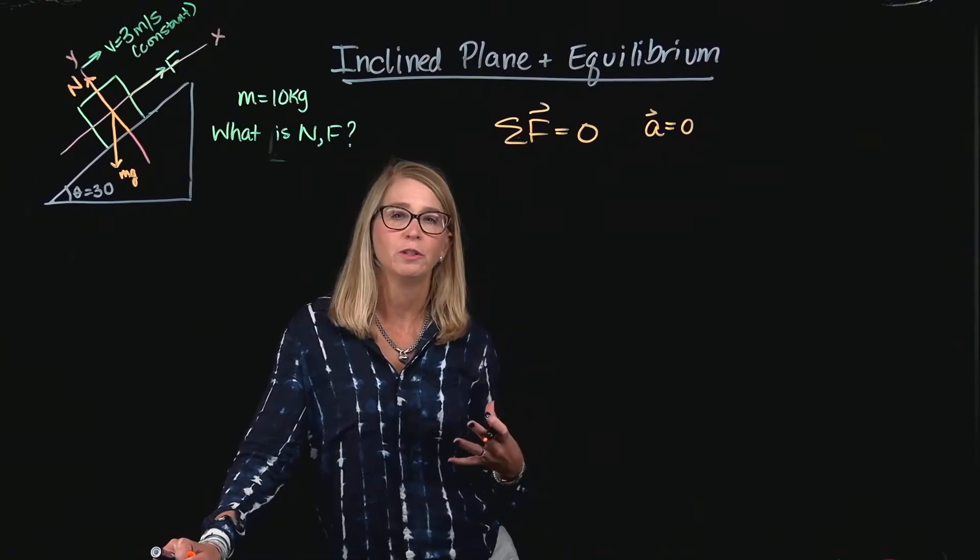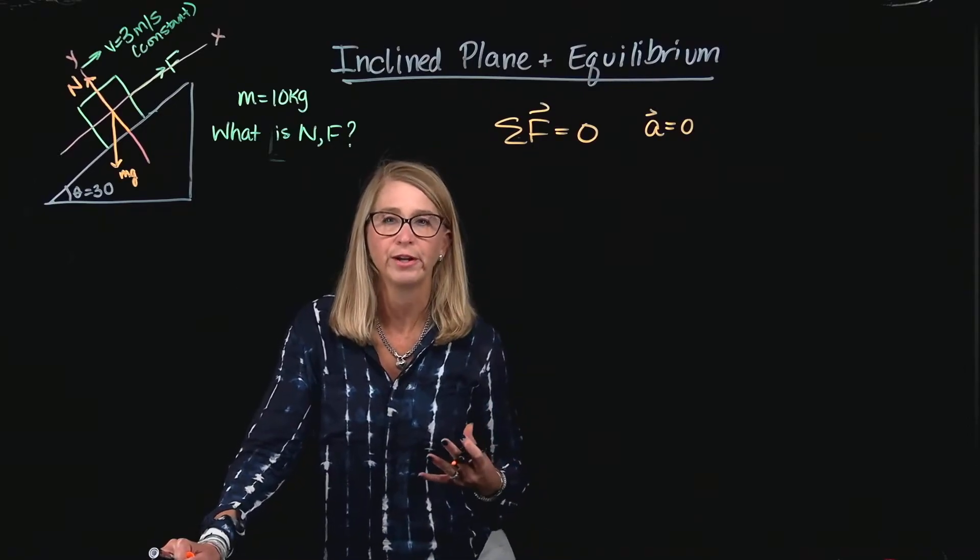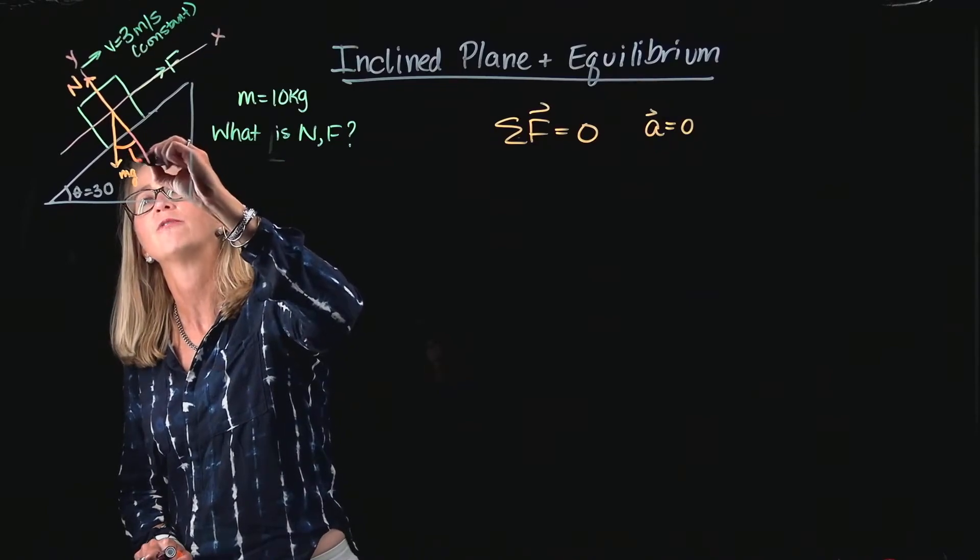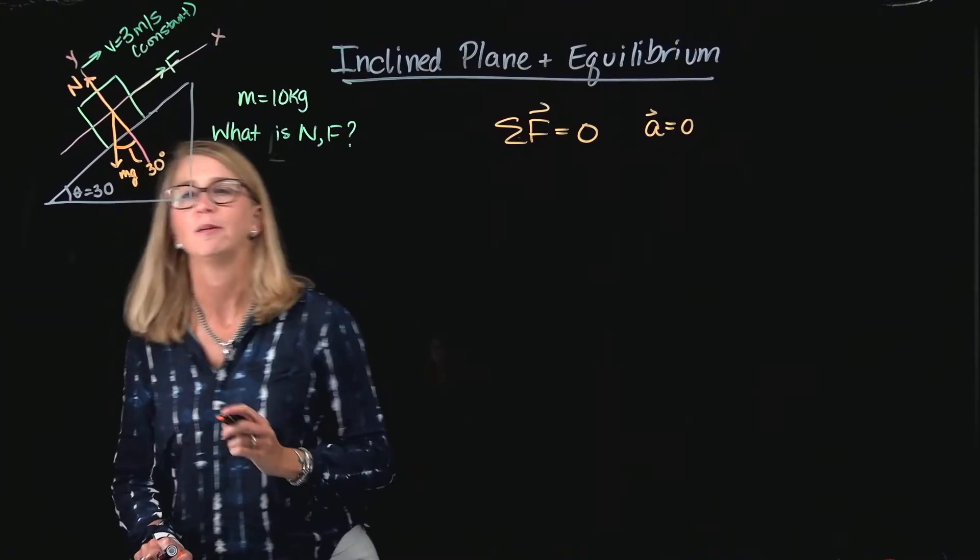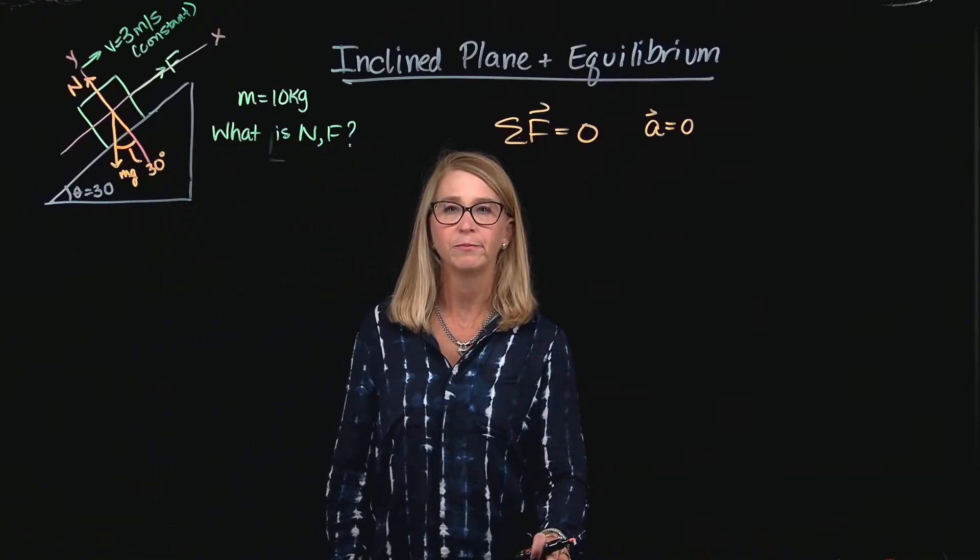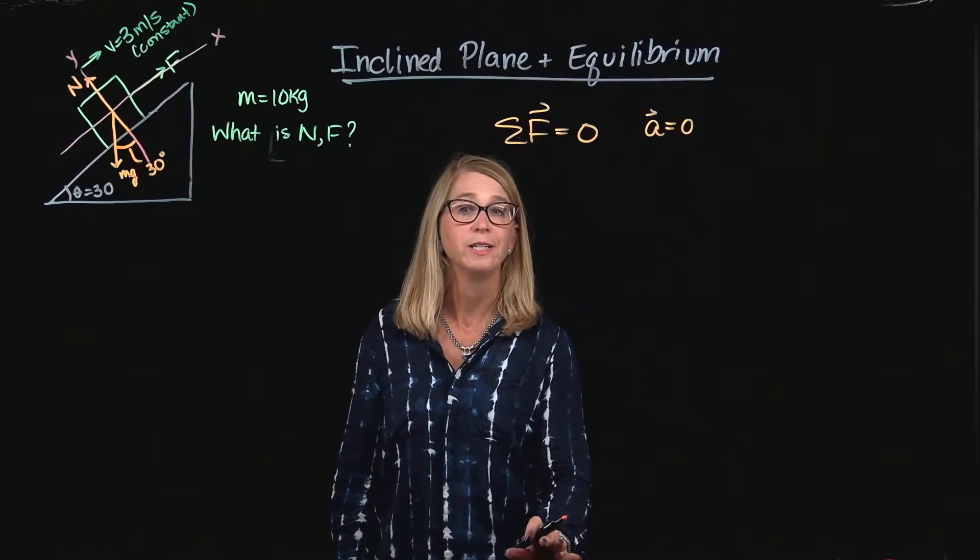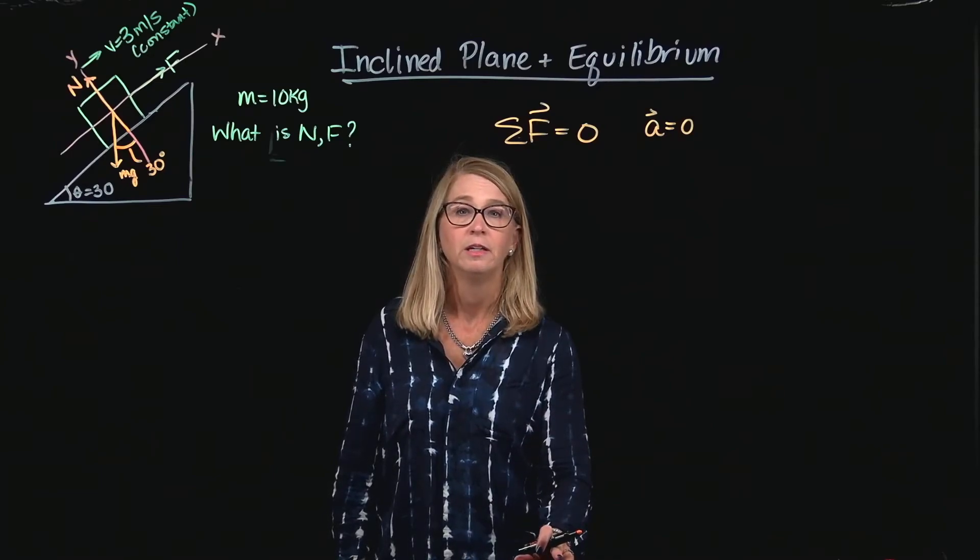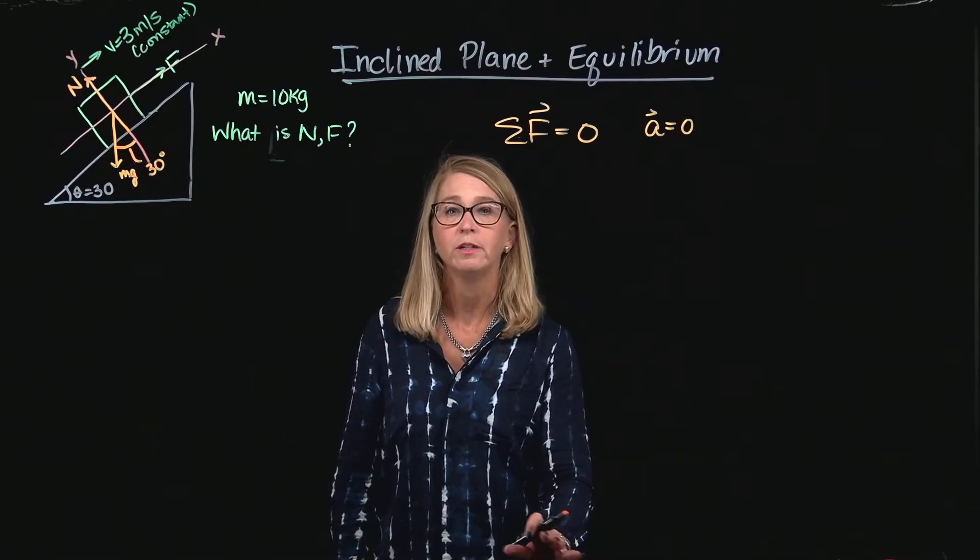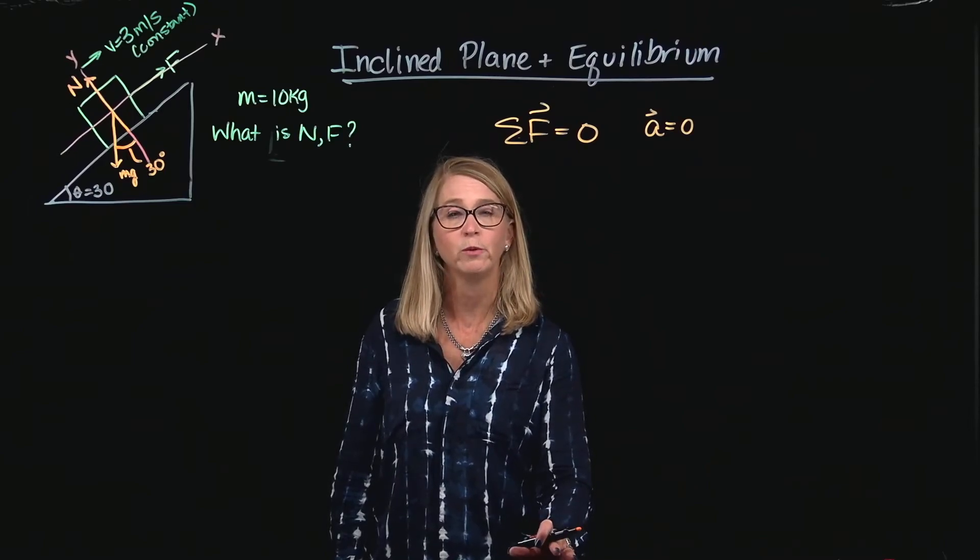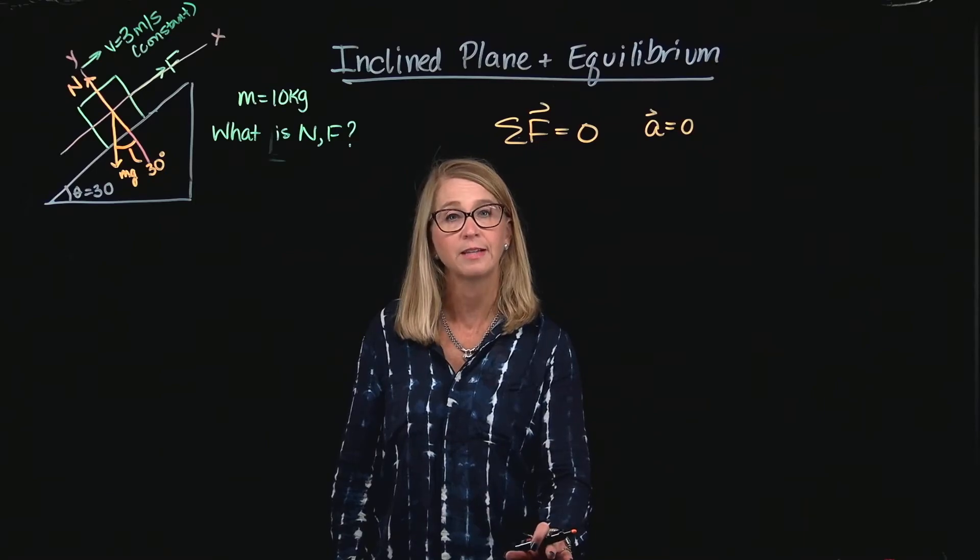Now, if you do a little geometry with your right triangles, you should be able to convince yourself that this angle right here is the same as the angle of the incline. Notice, that is the angle that the weight makes with the negative y axis. That's not normally how we define our angles when we're doing vector components. Normally, we define them relative to the x axis.